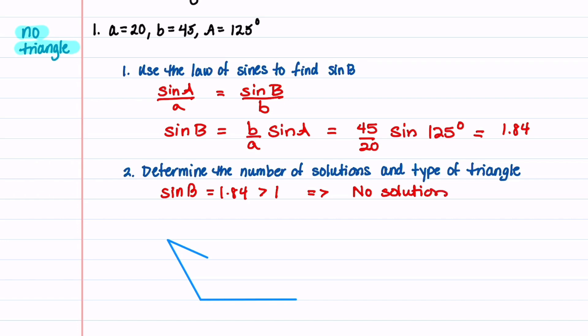Let's see what this looks like graphically. Side A is equal to 25, side B is equal to 45, and our angle is 125 degrees. You can see that we can't form a triangle with these side lengths and this angle.